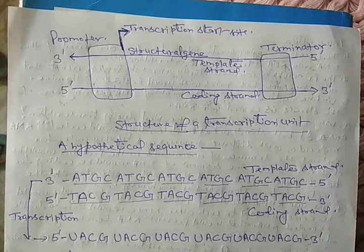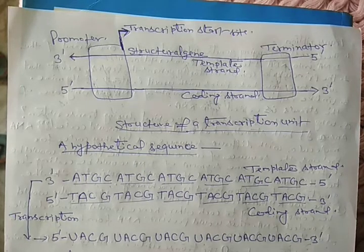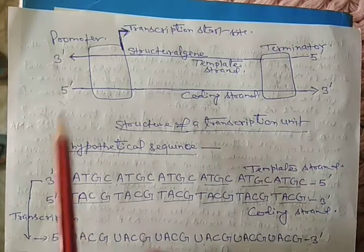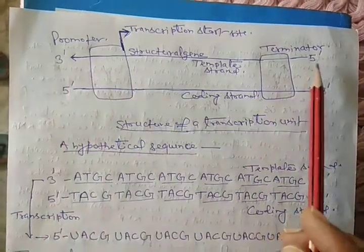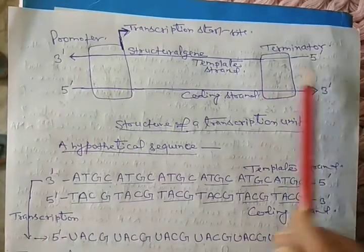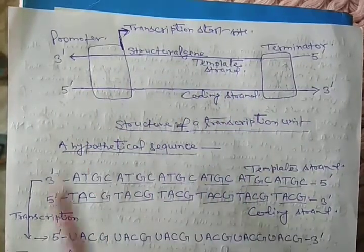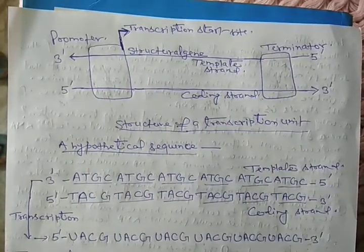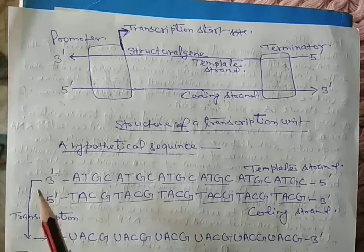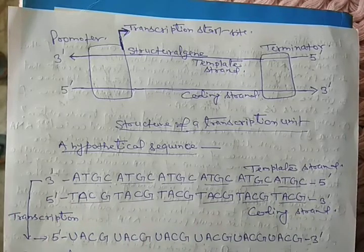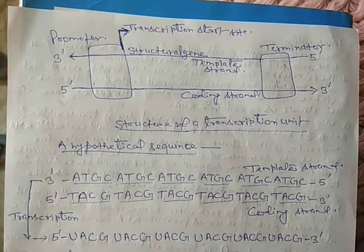Now, which strand acts as the template? The strand having polarity 3' to 5' acts as the template, because transcription always occurs in the 5' to 3' direction — just like replication. Replication, transcription, and translation all three events occur in the 5' to 3' direction.